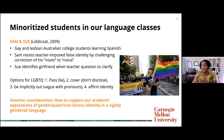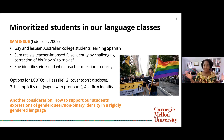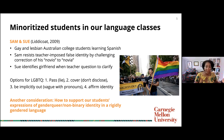Another consideration is how we support our students who don't even enter into this binary system — who aren't buying into the polar-opposite gender binary we've established. Students with genderqueer and non-binary identities have to navigate very rigidly gendered languages that we teach. How do we grapple with that?